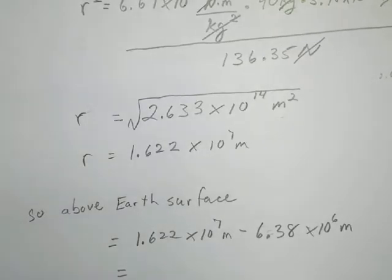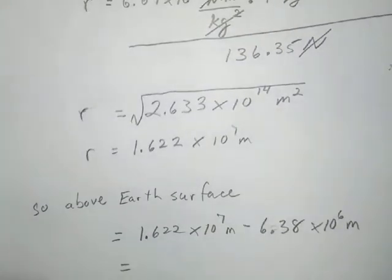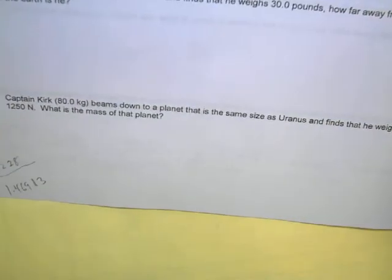Now looking at number four, number four talks about Captain Kirk saying he beams down on a planet the same size as Uranus and finds that he weighs 1,250 newtons. What is the mass of that planet?